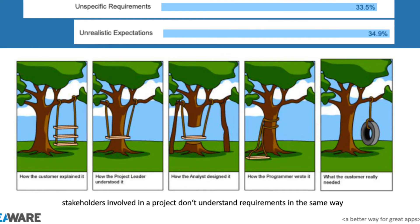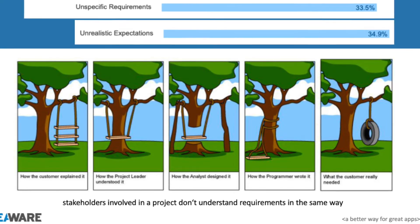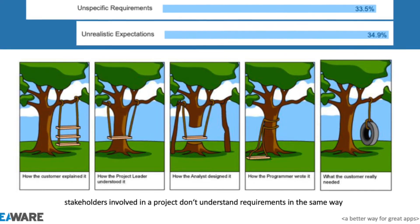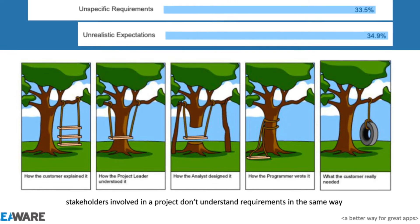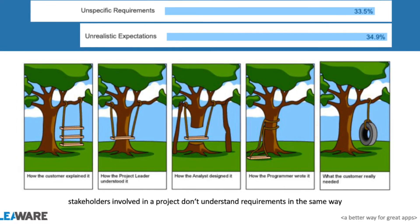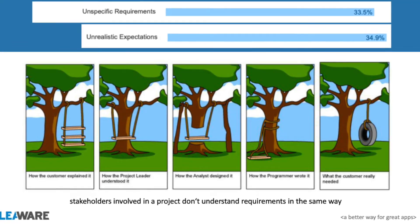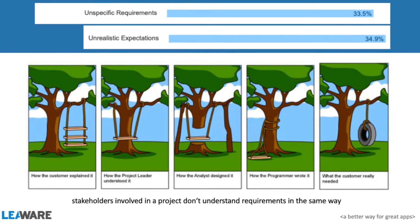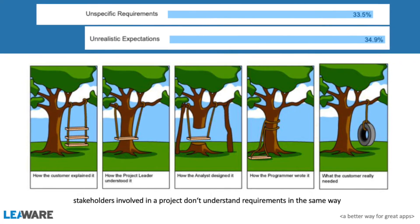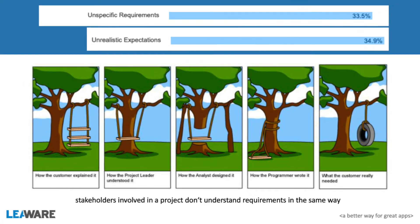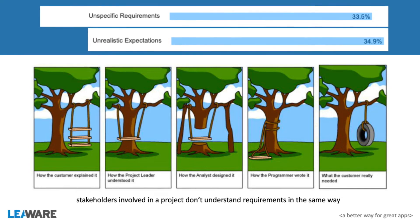Let's come back to the beginning. The first big problem is unrealistic, undefined, not well written-down expectations and requirements. This is one of the biggest problems in software development. If it's not clear for everyone what should be delivered, you can be sure it will not be delivered.